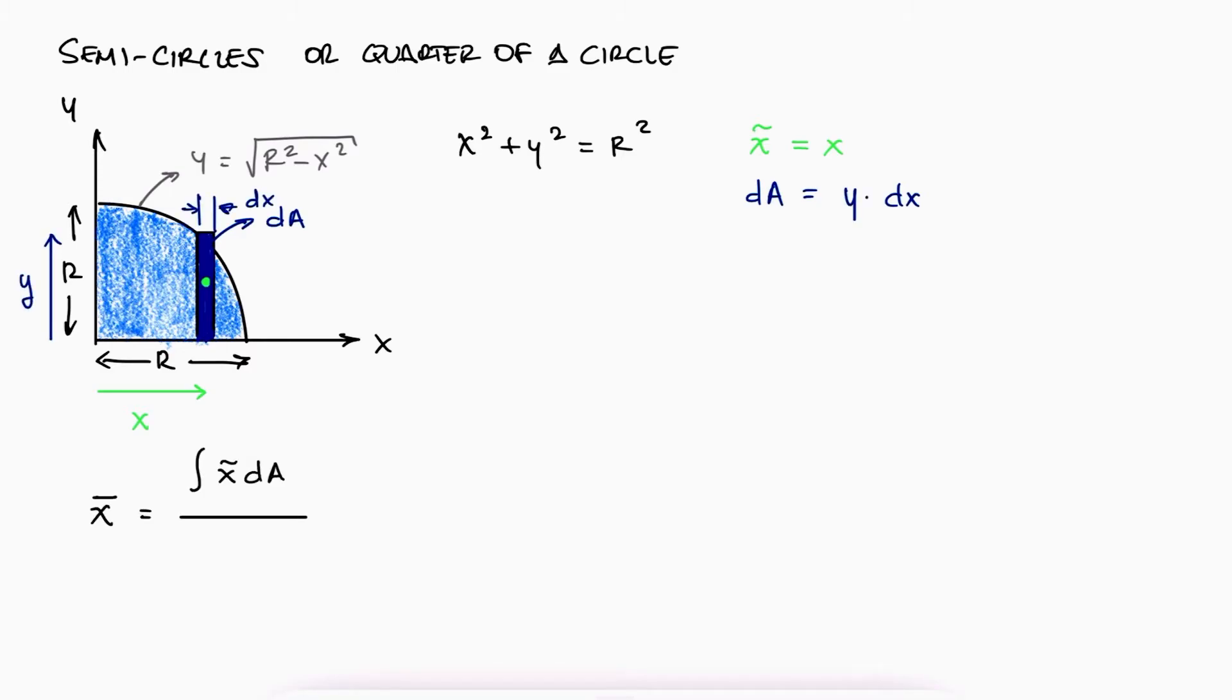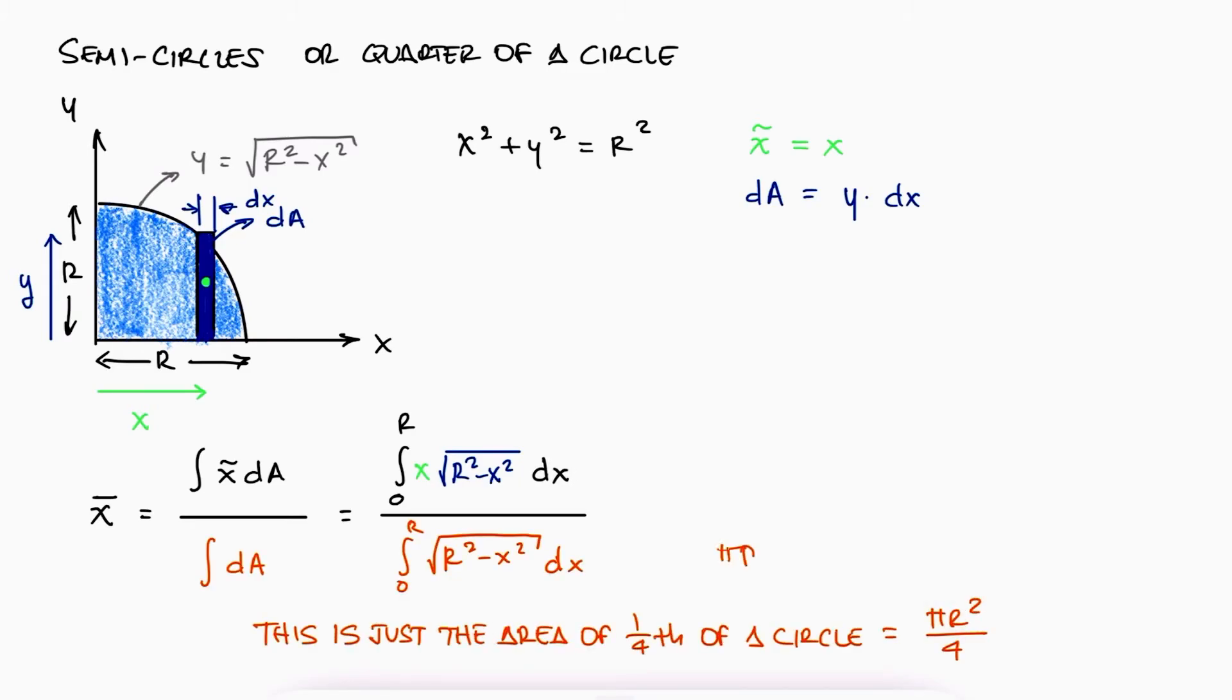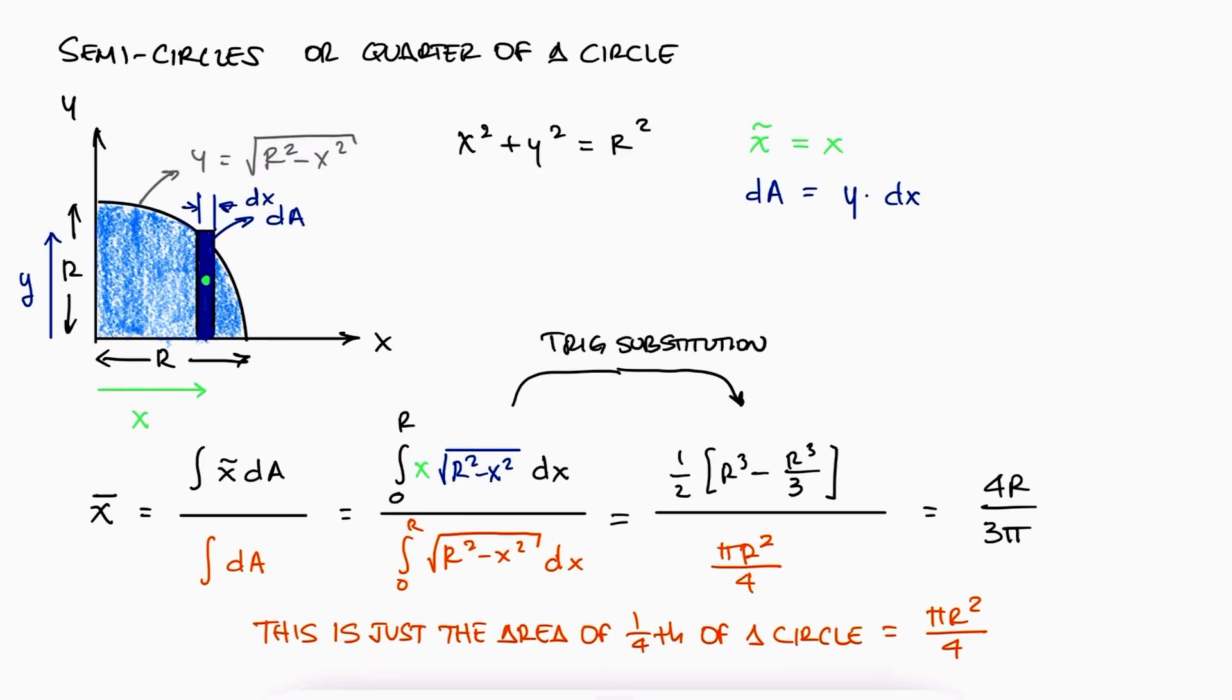If we use our centroid equation, and integrate x from zero to r, and substitute the variables with what we have, we find that x bar, the centroid in the x axis from the center of the circle would be 4r over 3π. And since the x and the y axis are symmetric, this is true for y bar as well.